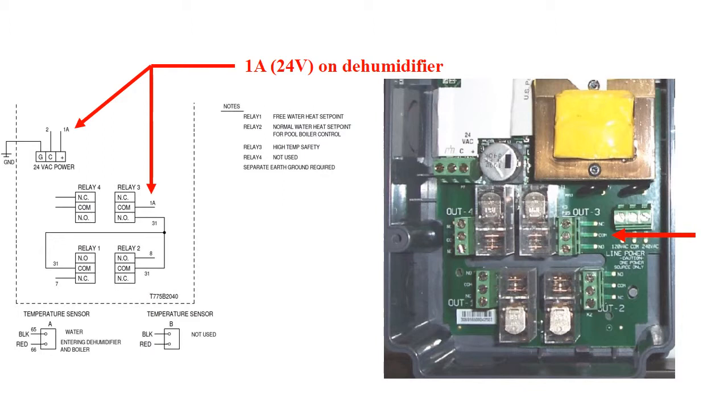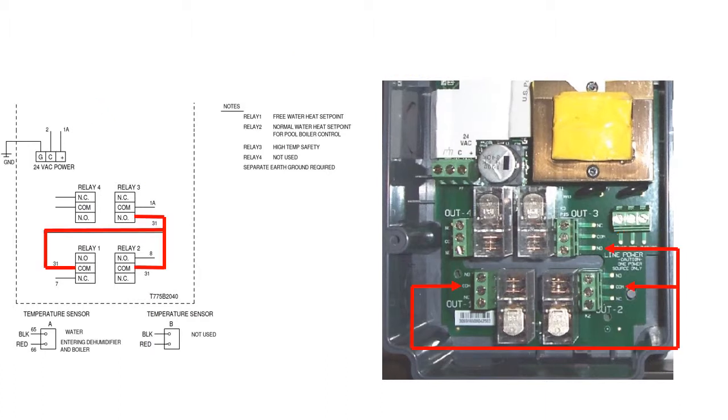The number 1A next to it tells us that it too, like the positive on the power strip, connects to a 1A terminal on the dehumidifier. The normally open terminal on this relay is connected to the COM terminals on relays 1 and 2 by a wire here labeled number 31.